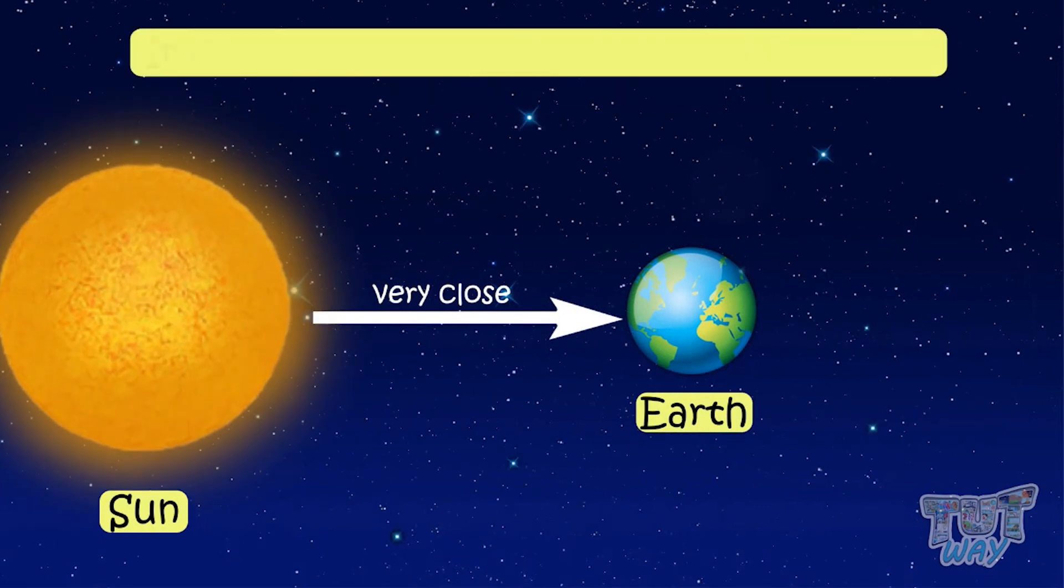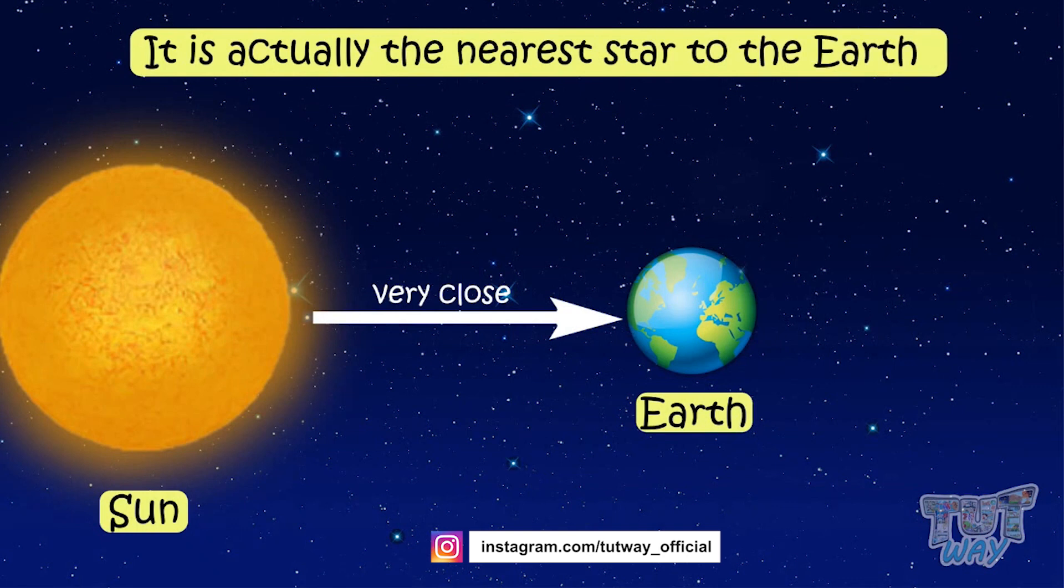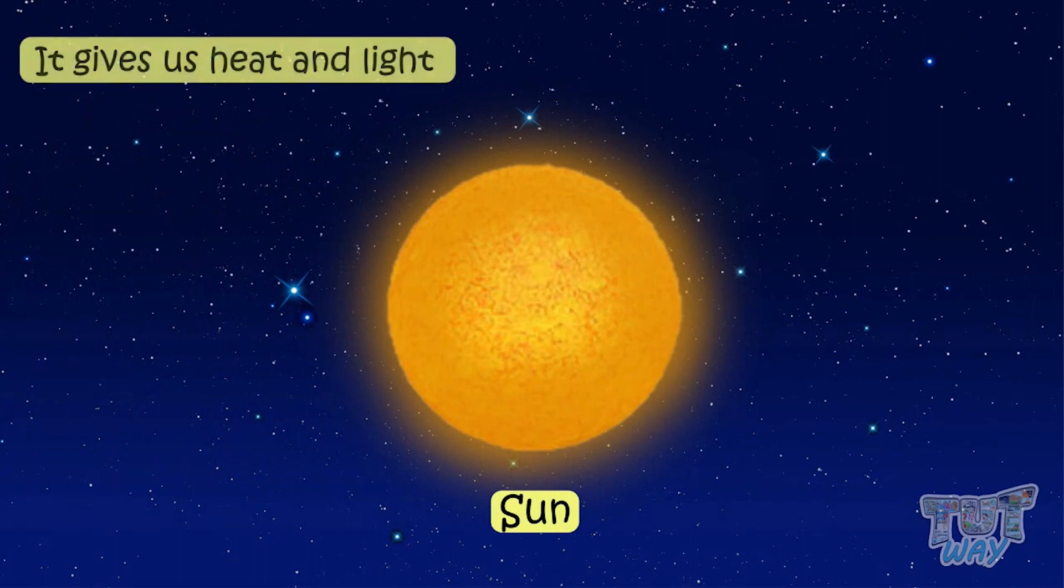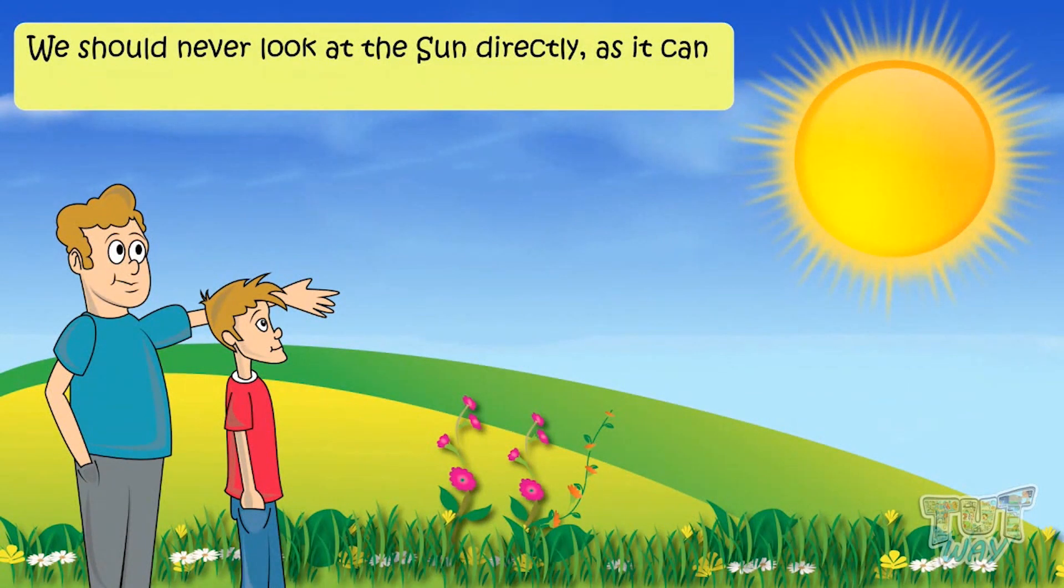It is actually the nearest star to Earth, and we call it sun. It is a big ball of gases. It gives us heat and light. We should never look at the sun directly as it can harm our delicate eyes.